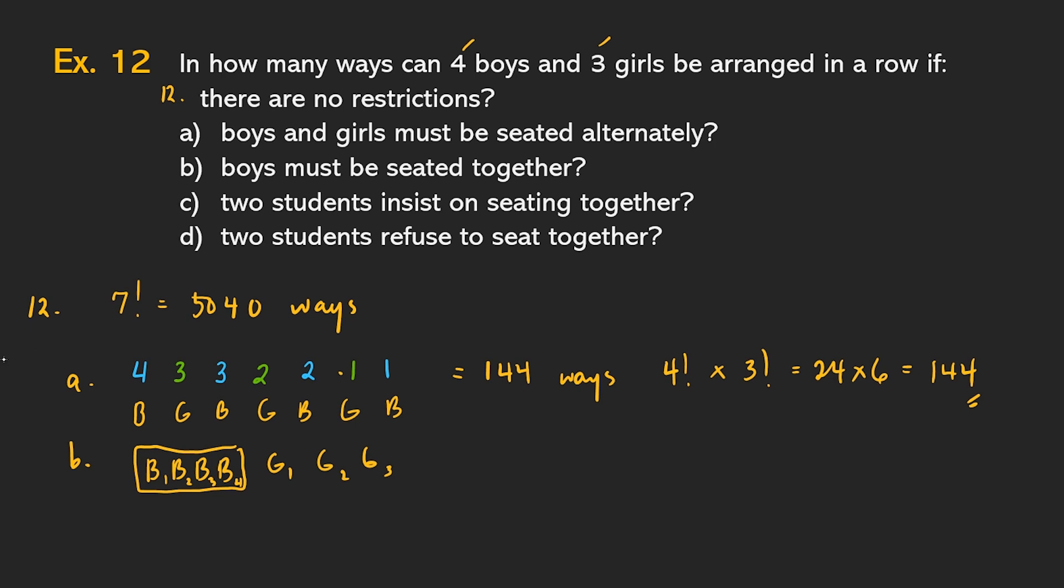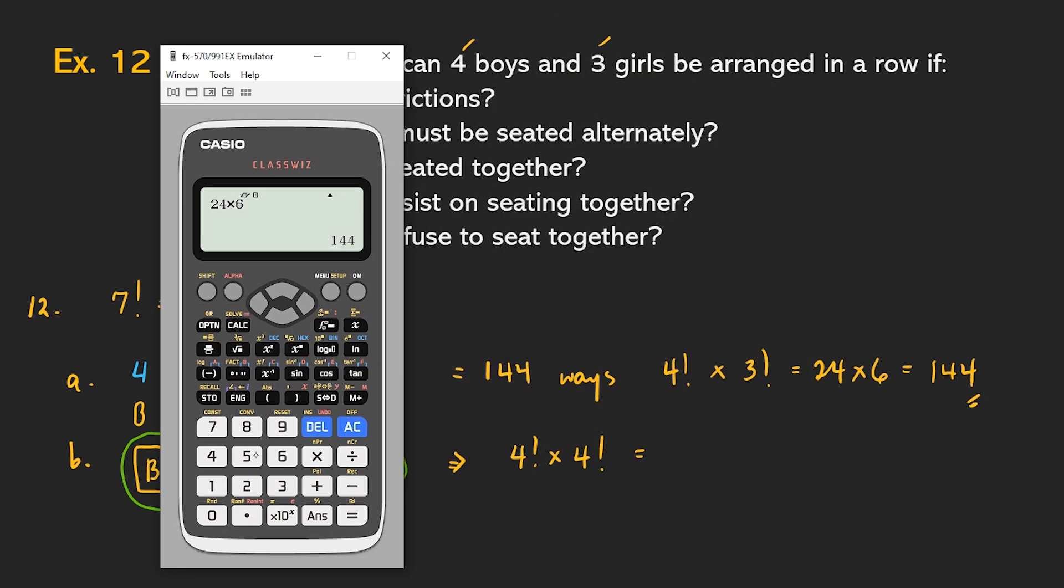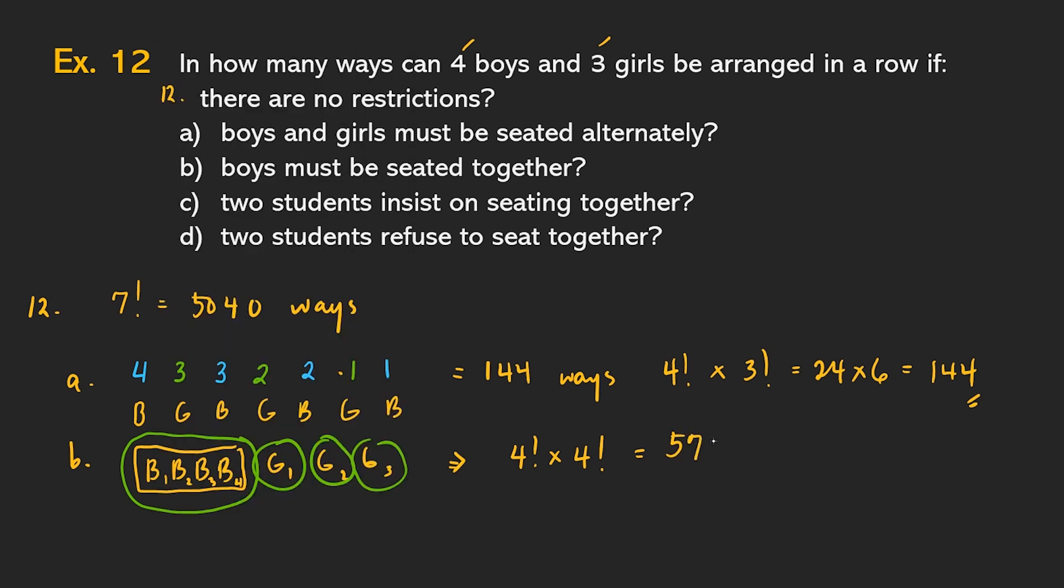So in short, kung igugroup natin as one, itong mga boys, so we are arranging how many objects? We have one, two, three, four. So since we are arranging four objects na lang, we can do that in four factorial ways. Yung four objects. But take note, yung mga boys mo, inside them, you can also arrange them in four factorial ways. Kasi apat sila. So it's four factorial times four factorial. So again, what's four factorial times four factorial? We have four factorial times four factorial. So the answer is 576. So you can do that in 576 ways. Do not forget, kapag ginurup mo itong mga boys, because they want to be seated together, sa loob nila may arrangement pa rin sila.